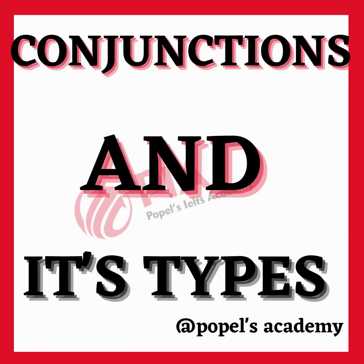What are conjunctions? What are its types? Conjunctions are words that are used to connect words, phrases, clauses, or sentences in a sentence. They are used to show the relationship between the words or ideas being connected.